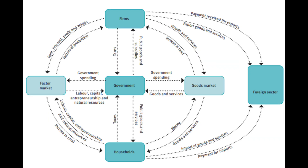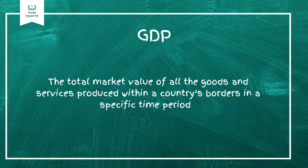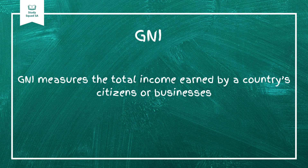To sum it all up: the circular flow model explains how money, goods, and services move through the economy. GDP measures the total value of goods and services produced, while GNI measures the income earned by a country's citizens. Both are valuable tools, but they have their limitations — they don't account for wealth distribution, informal economies, or sustainability.